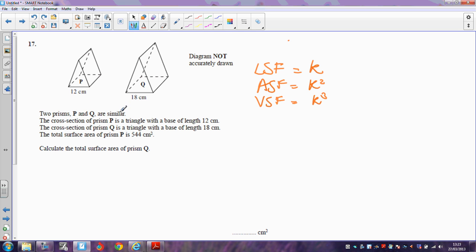So let's have a look at what we've got. Prism P is 12 centimeters across, prism Q, which is similar, is 18 centimeters across.